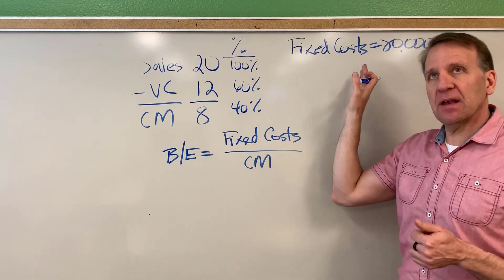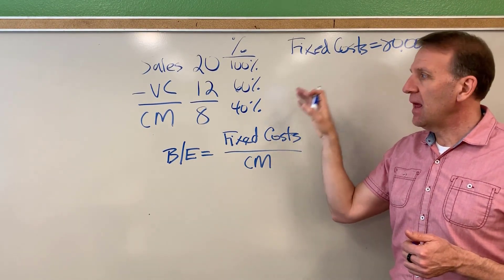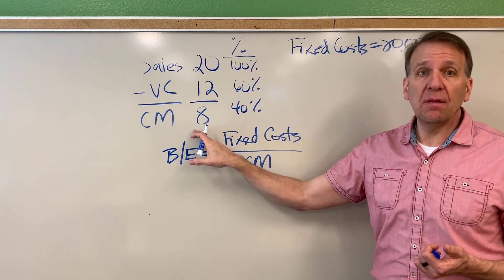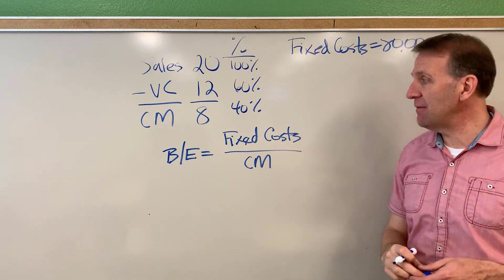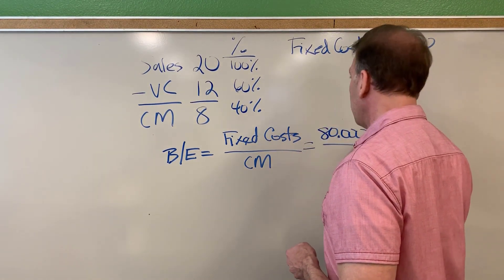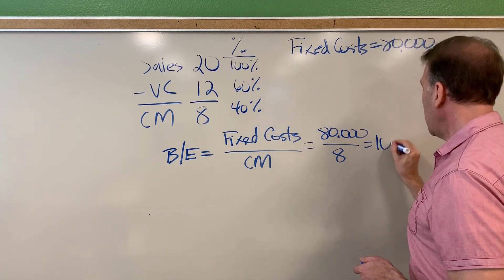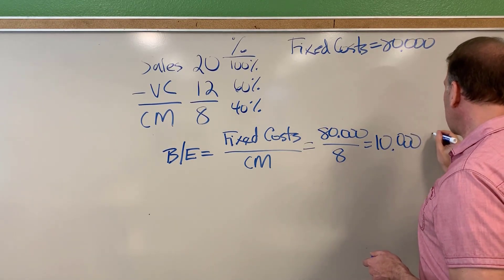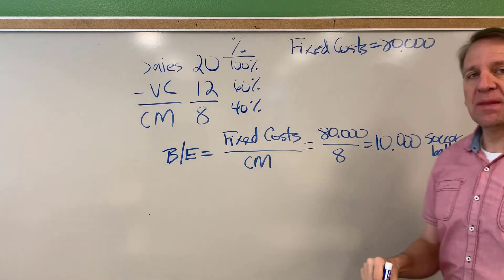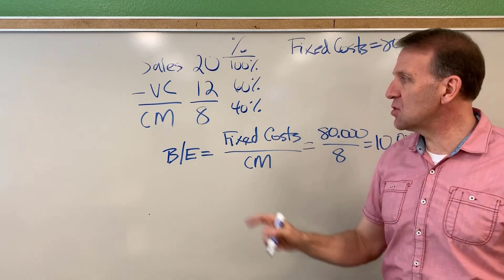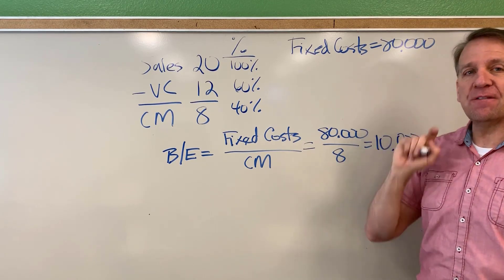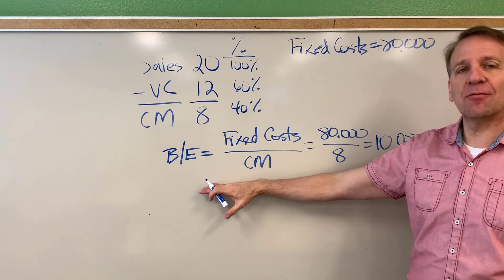Hopefully at this point, without even calculating this, you could say, well, if my fixed costs are $80,000, and every time I sell a soccer ball I have $8 left over as my contribution margin, then I can calculate my breakeven. You would take your fixed costs of $80,000 divided by your contribution margin of eight, and that would get you 10,000 soccer balls. When you sell 10,000, each one generates $8 of contribution margin, so that would then cover your fixed costs.